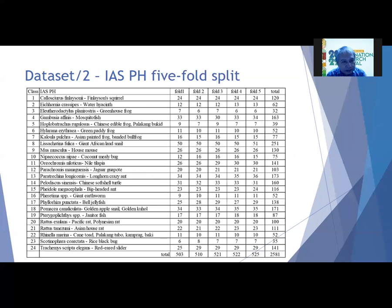At the start, we split the dataset of 2,581 images into five folds. In this way, every run will have a fold that is part of the testing set or the validation set, and across all runs, the whole dataset is represented as the validation set.